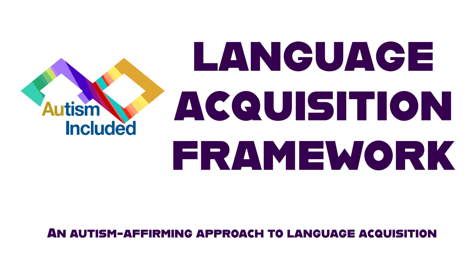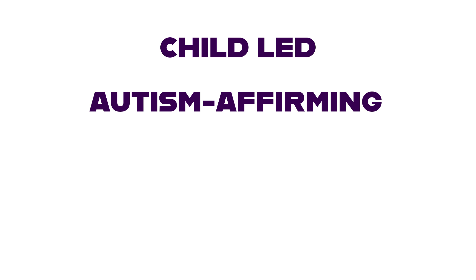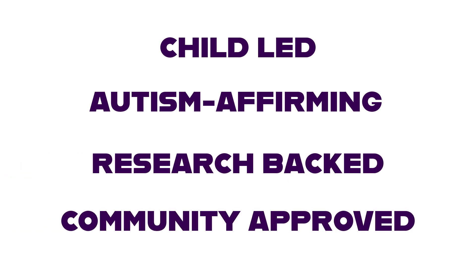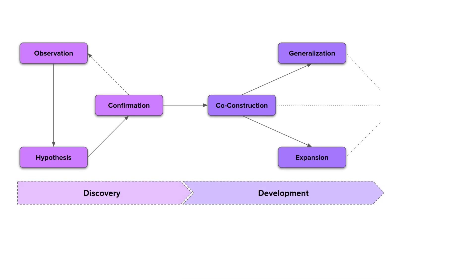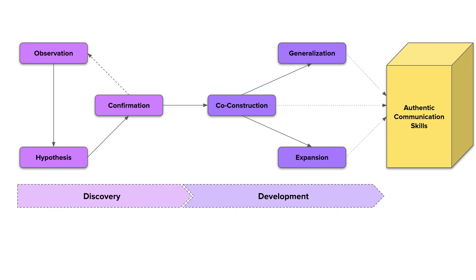Introducing the Autism-Included Language Acquisition Framework, an autism-affirming approach to language acquisition. The Autism-Included Language Acquisition Framework is a child-led, autism-affirming approach to language acquisition backed by modern research and the support of the autistic community. The framework consists of six steps across two stages, resulting in the acquisition of authentic communication skills.